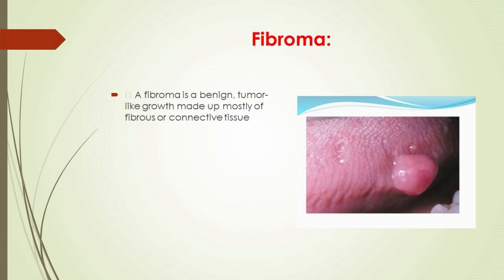A fibroma is a benign tumor-like growth made up mostly of fibrous or connective tissue. Development of uncontrolled cell growth occurs for an unknown reason or as a result of injury or local irritation. Fibromas can form anywhere in the body, are usually painless, and usually do not require treatment or removal.